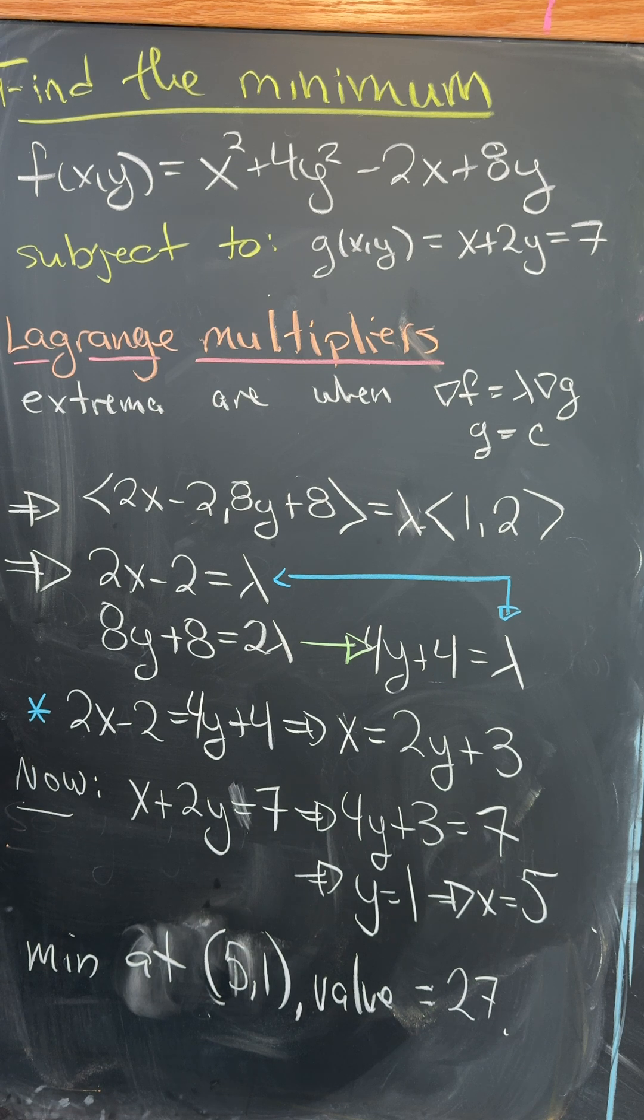We can solve for x easily and plug it into the constraint equation, which can be solved to get x = 5, y = 1, meaning that we have a minimum at point (5,1) with a value of 27.